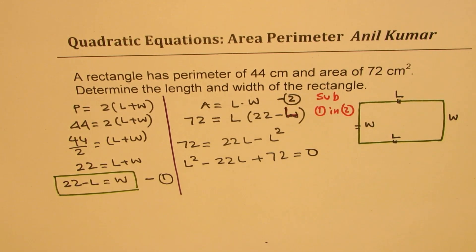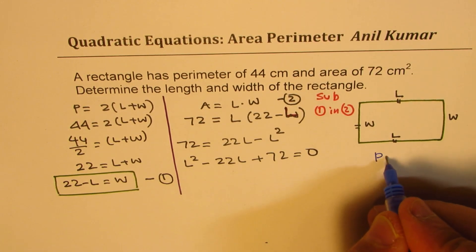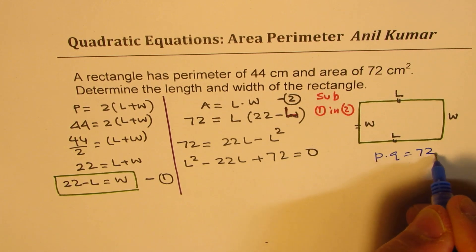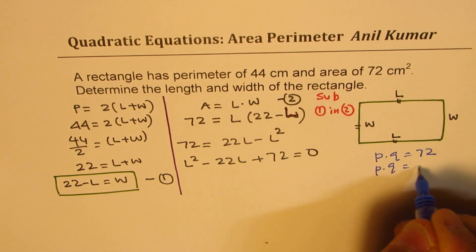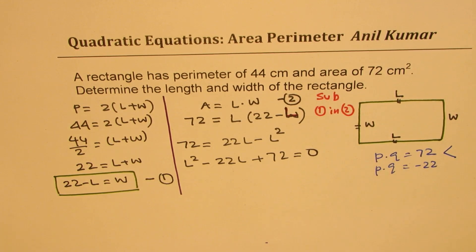Now factor. We are looking for product and sum - two numbers whose product is 72 and their sum should be minus 22. So what are these two numbers? This is what you need to work out. If it becomes difficult, what you could do is just factor 72.